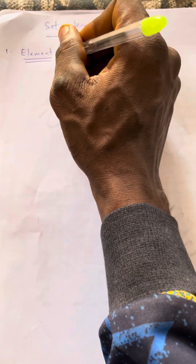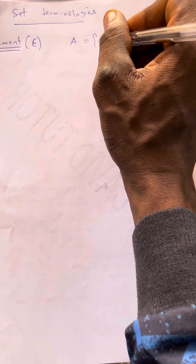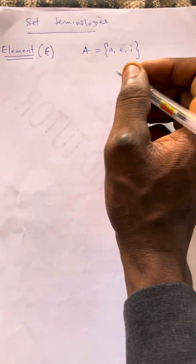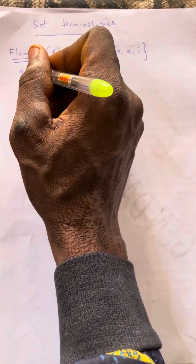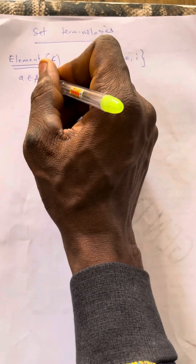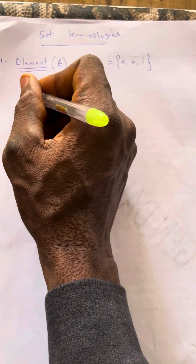The notion of element of a set is like this. The elements of a set are objects that are present in a particular set. For instance, if we say set A is equal to {A, E, I}, then we can say that element A is an element of set A. And it's obvious that E and I are also elements of set A.